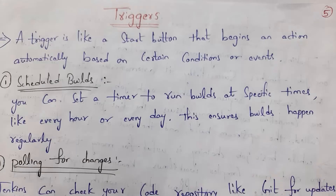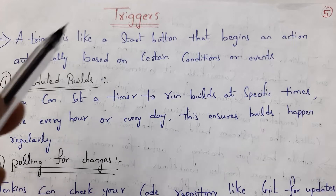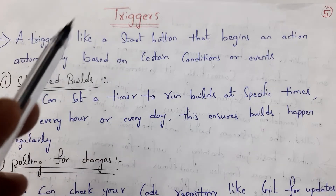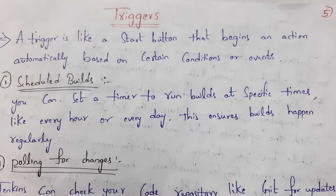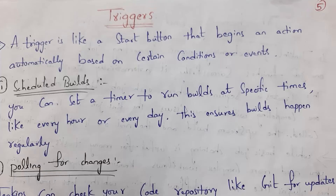First, I will explain what are triggers. A trigger is like a start button that begins an action automatically based on certain conditions or events. For example, I clicked on the mouse, so some action will take place. I clicked the enter button on my keyboard, so some action will take place. So clicking on mouse, clicking on keyboard — all these are examples of triggers.